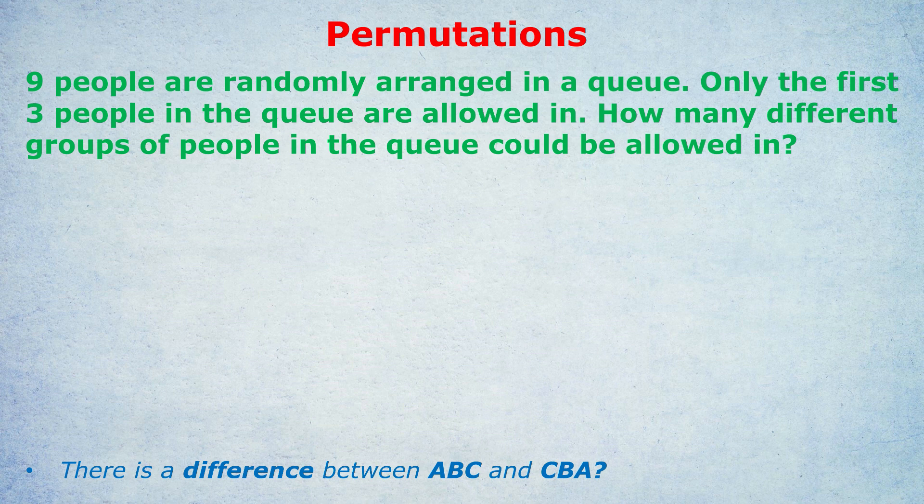In this case, three people at the front of the queue or wherever in the queue being allowed in doesn't make a difference between whether those three people are ABC or CBA. So it's the combinations formula. Obviously, I put the title of permutations just to trick you. And that's what I wanted you to take away from this video. It's more often combinations than permutations. And I want you to notice the difference. Here, it doesn't matter the order of the three people at the front. As long as they are the same three people, the order they're standing in doesn't matter. They'll still be allowed in. Did you fall for the trap?